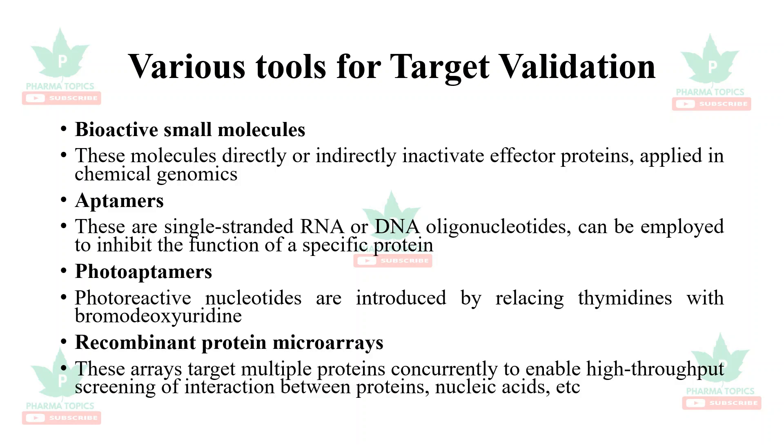Photo aptamers introduce photo-reactive nucleotides by replacing thymidines with bromodeoxyuridine. Recombinant protein arrays target multiple proteins concurrently to enable high-throughput screening of interactions between proteins and nucleic acids.